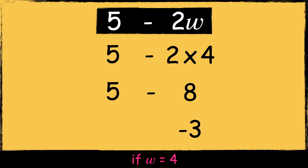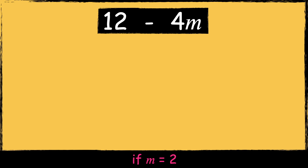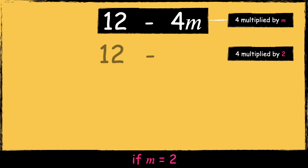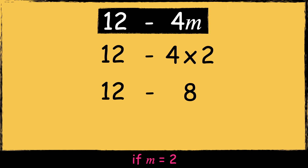Now we're left with the subtraction: 5 take away 8 equals minus 3. So if W equals 4, then the value of this expression is minus 3. Here's the next expression: 12 take away 4m. We're going to find the value of this expression for if m equals 2. We know that 4m means 4 multiplied by m, and if m equals 2, then the expression says 12 take away 4 times 2. Remember, according to the order of operations, we perform multiplication before subtraction. 4 times 2 equals 8. Now we're left with the subtraction: 12 take away 8 equals 4. So if m equals 2, the value of this expression is 4.